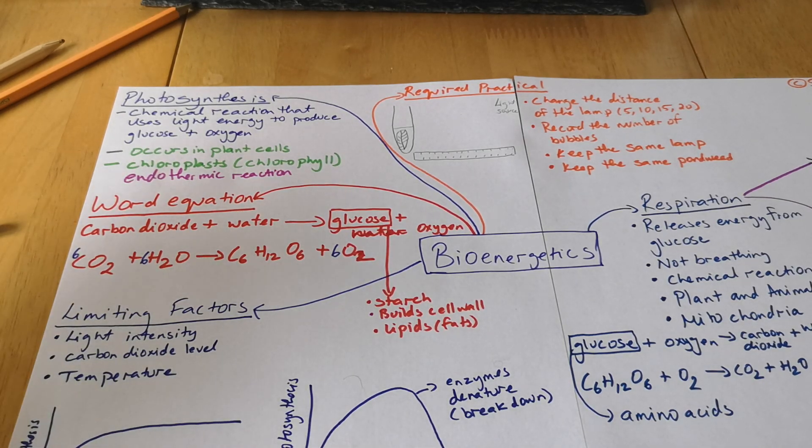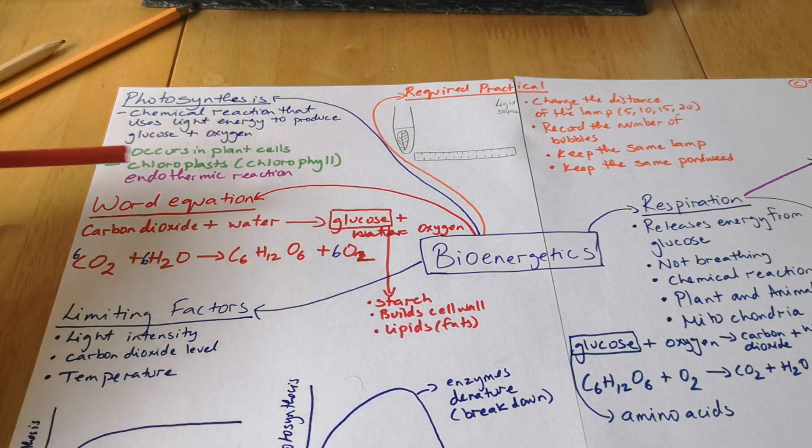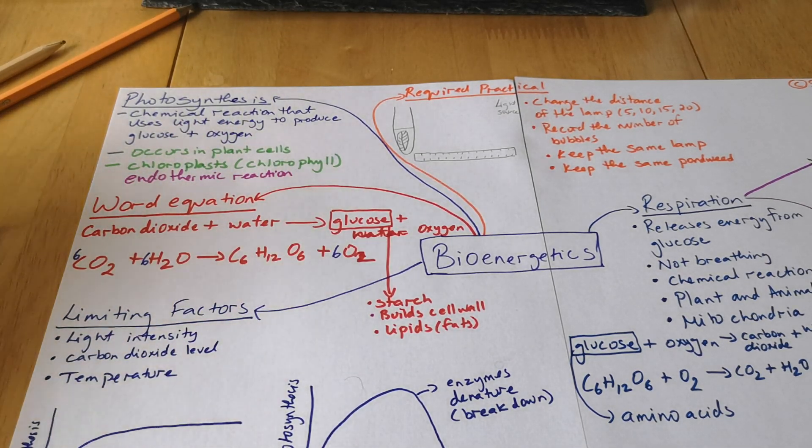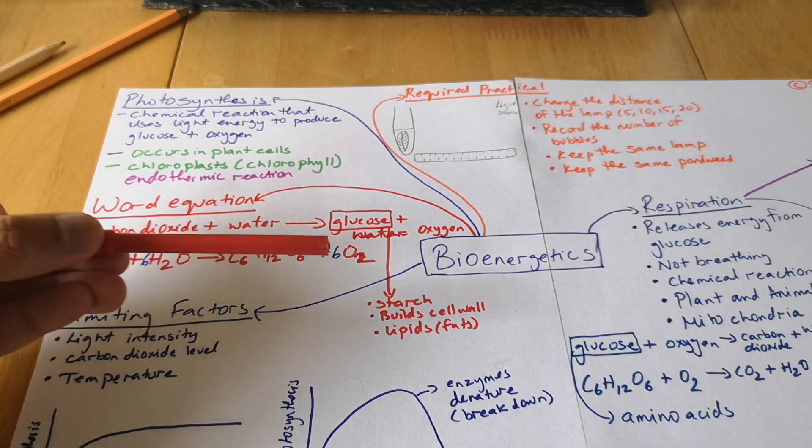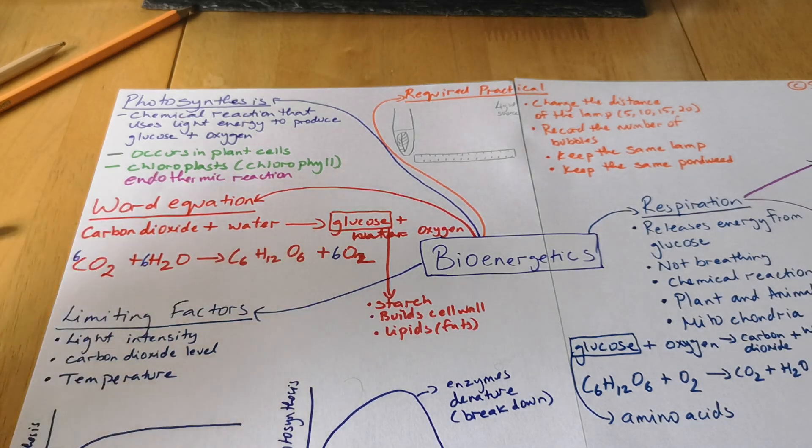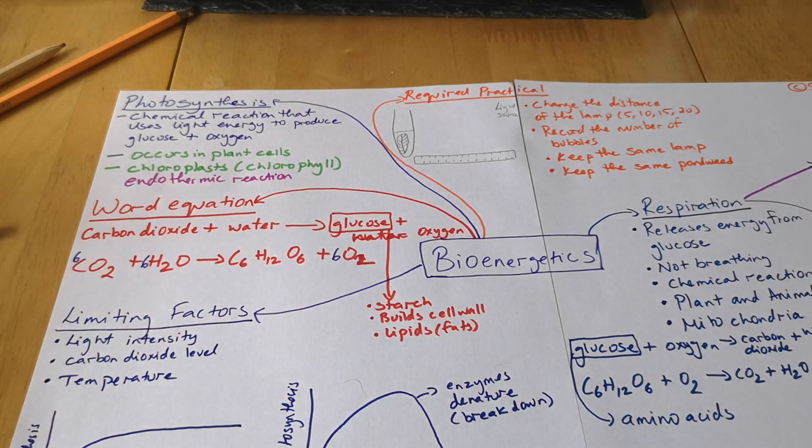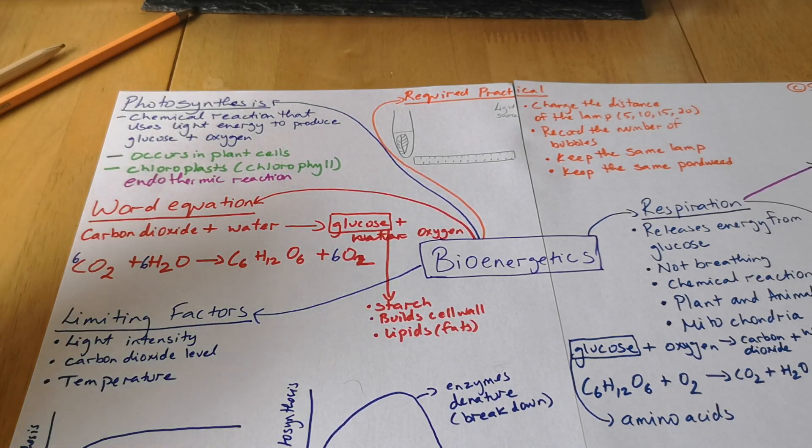Glucose made in photosynthesis, really important, that's why it's really important to study photosynthesis as well. Because it builds starch, builds up the cell walls in plants, lipids or fats as well, it helps with a lot of things. So that's why photosynthesis is quite important.